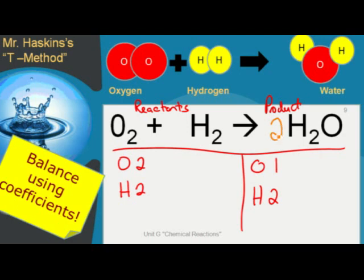If we write the coefficient 2 in front of water, we change the number of oxygens to 2, because it's 2 times its subscript 1, which equals 2. The coefficient 2 changes hydrogen, because the subscript for hydrogen is 2. So it's 2 times 2, and hydrogen is now 4.